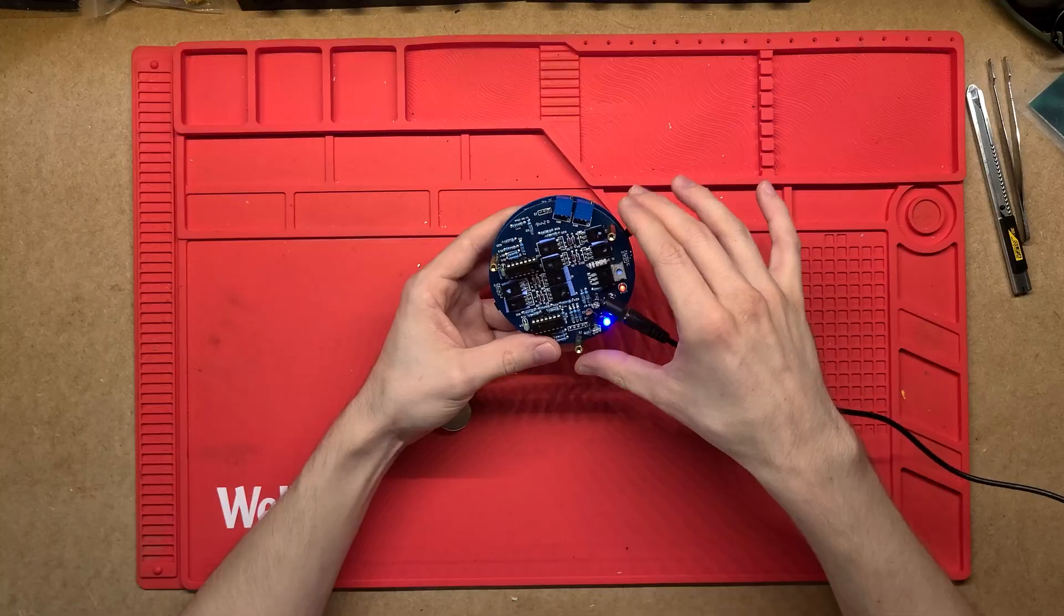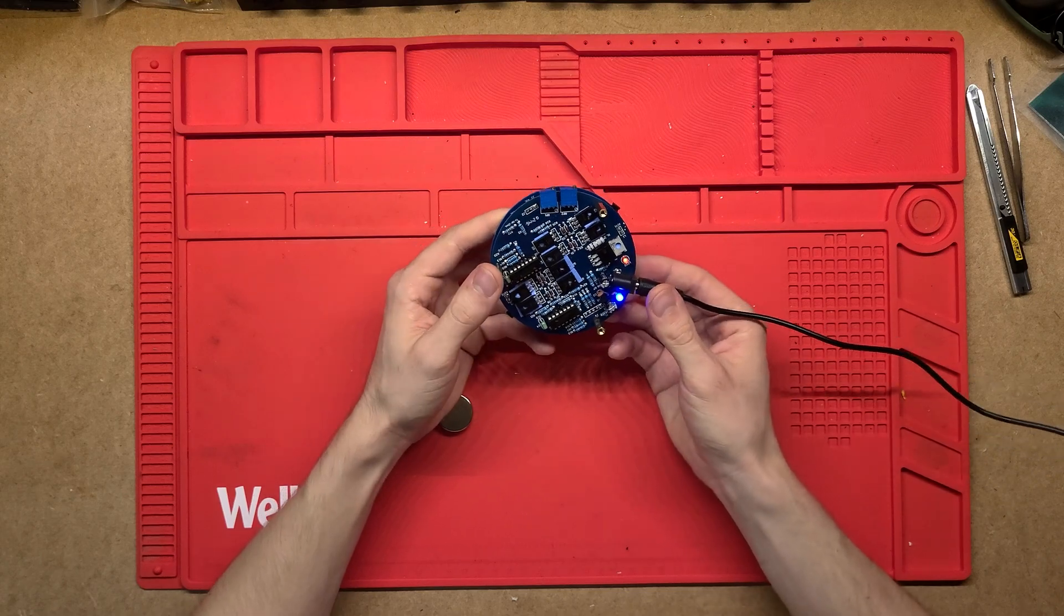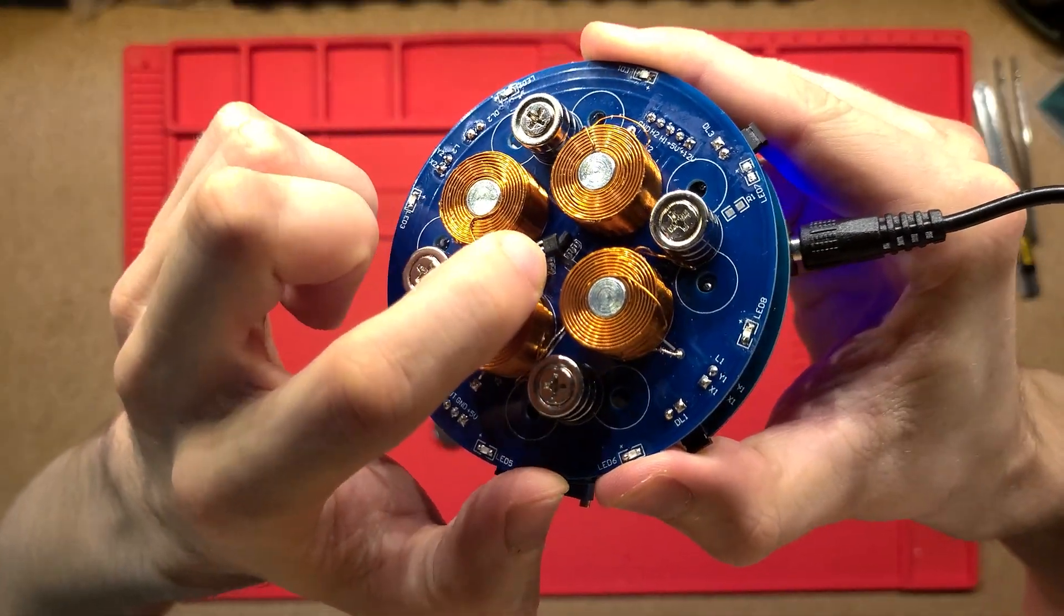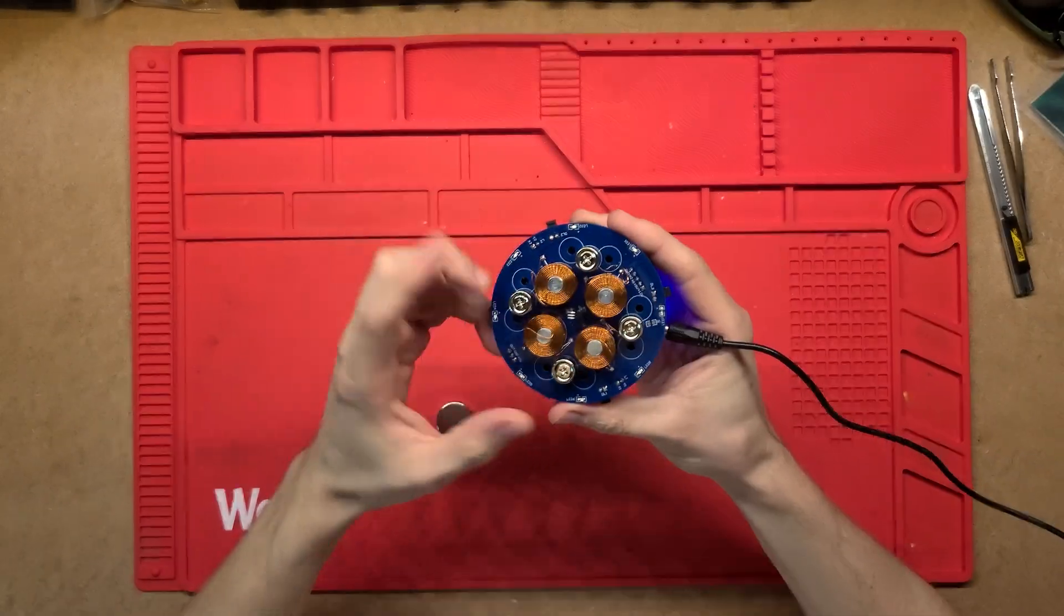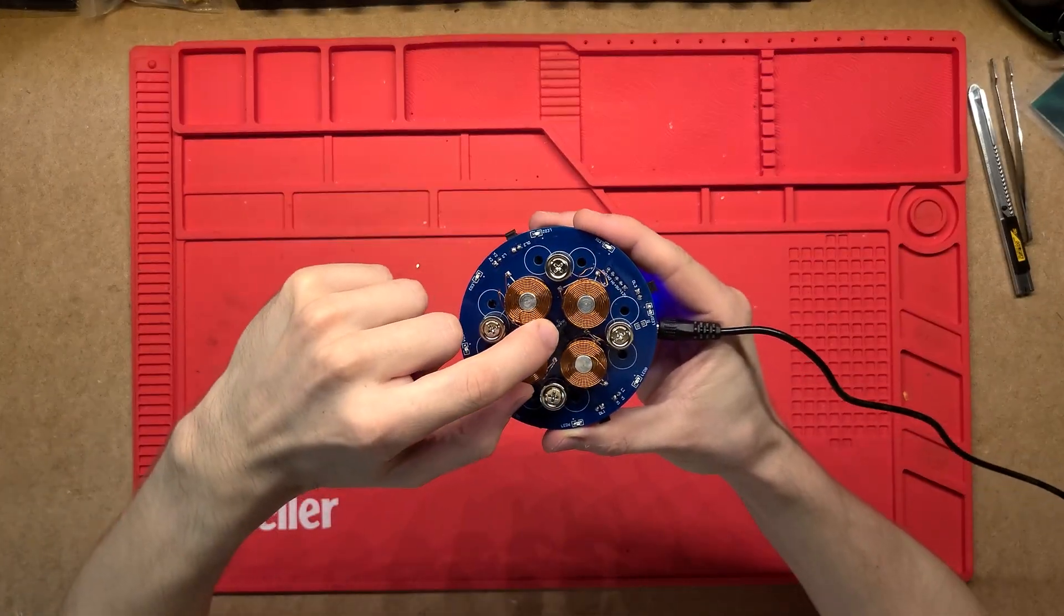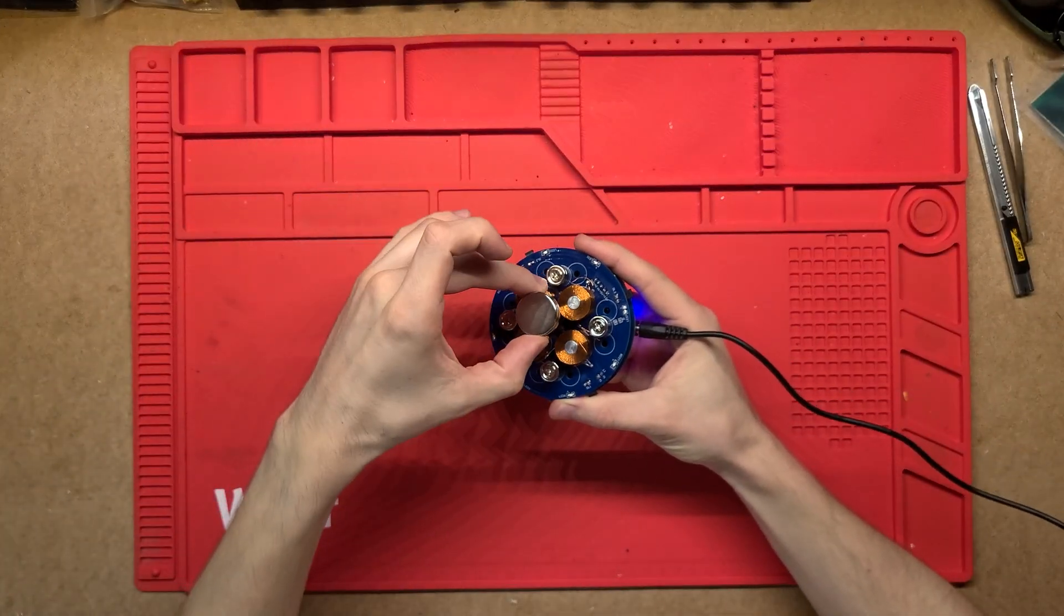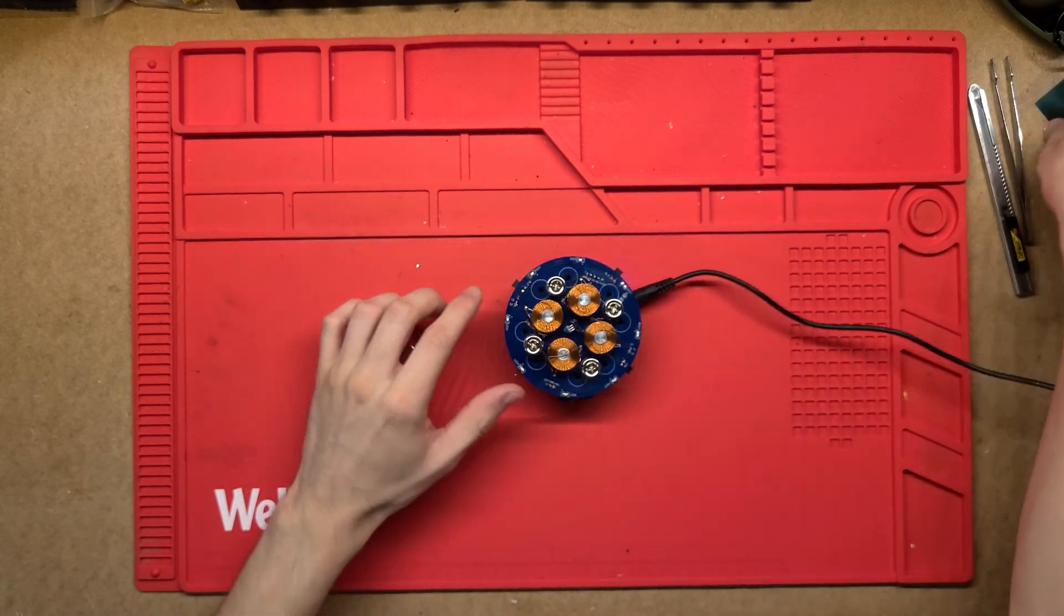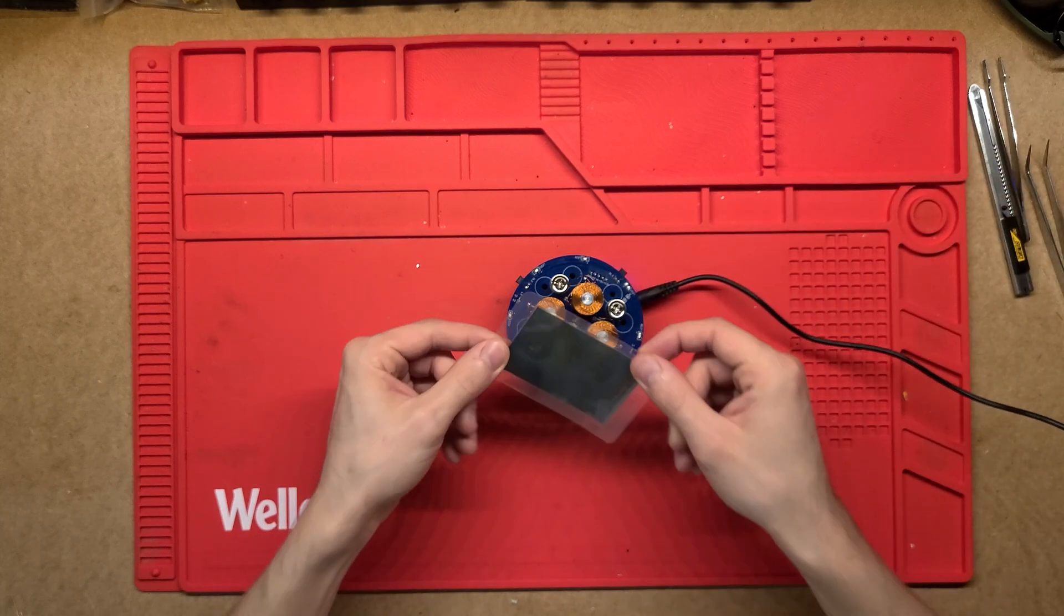There's a lot of little components but it's quite simple how this works. Right on top here you can see there's three Hall effect sensors for three different directions - x, y, and z - and what they do is sense the position of that magnet with respect to the coils and these magnets.